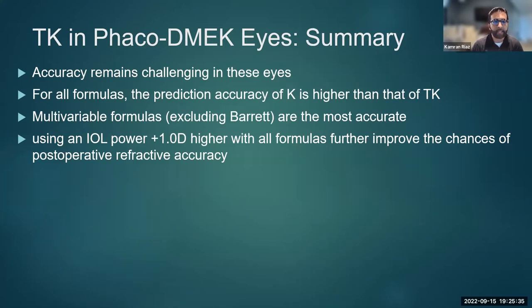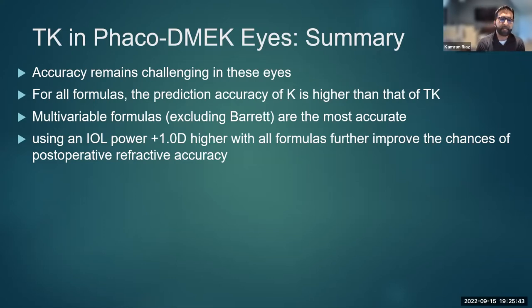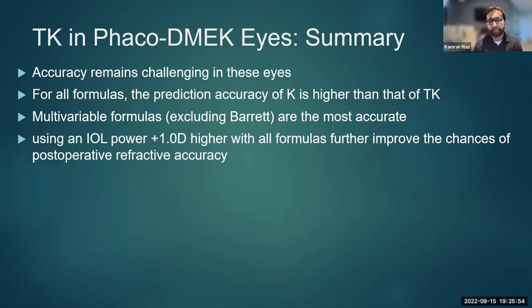The multivariable formulas, excluding Barrett, are the most accurate if we don't use the one-diopter IOL adjustment. The best and most practical approach is to use the IOL power one-diopter adjustment and use the printout formula — either SRK/T or Barrett Universal — which is generated by the biometry printout. This saves time and effort compared to going to manual online-only calculators.